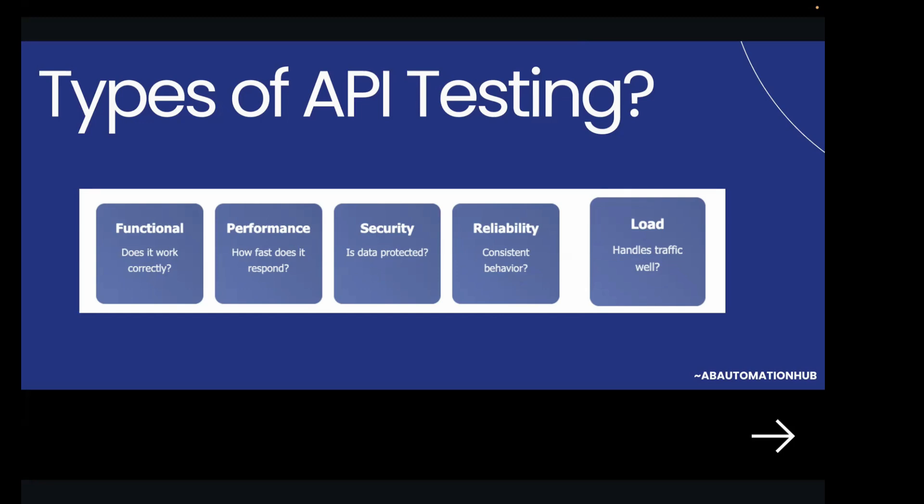Think of it like testing a car: you check if it starts — that is functional testing; you check how fast it goes — that is performance testing; you check if the locks work properly — that is security testing; and if it runs smoothly on long trips — that is reliability testing. These are the different types of API testing.